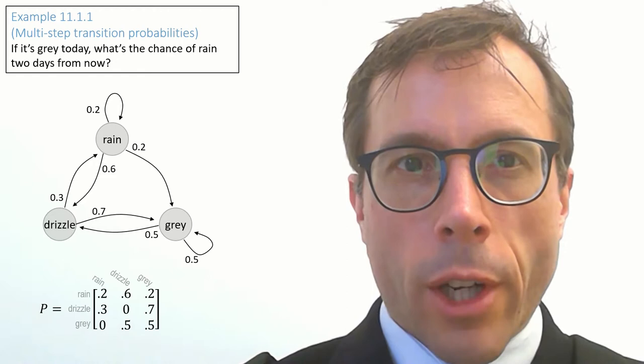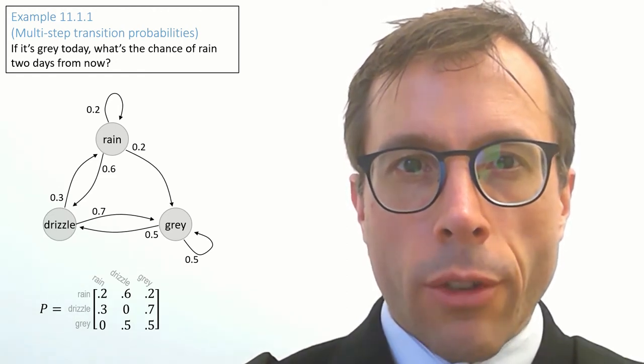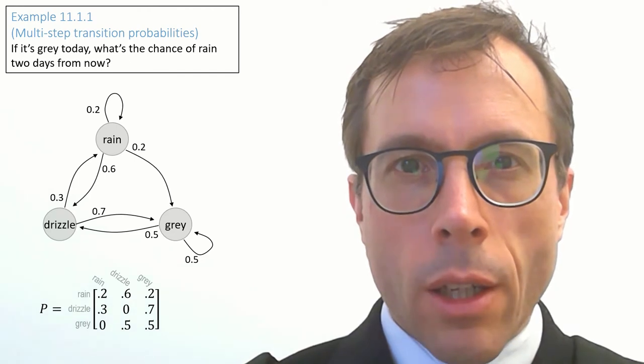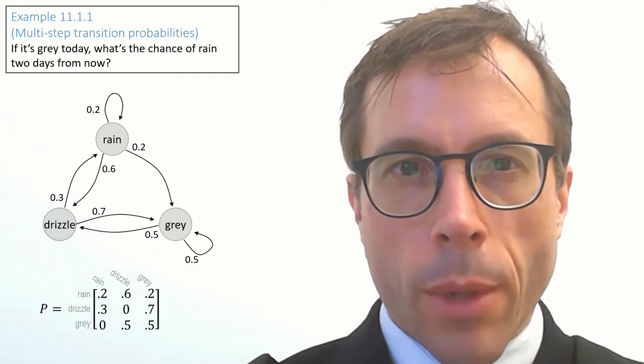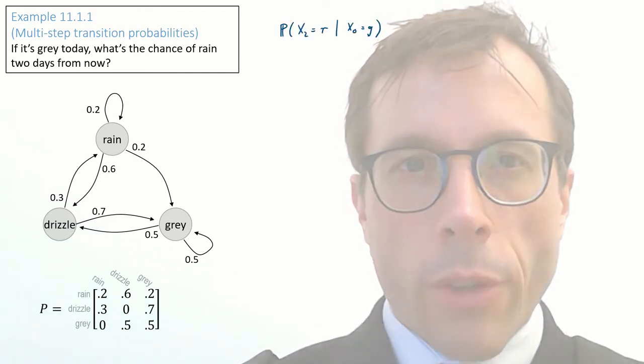Here's the state space diagram and the transition matrix. The question asks us, if it's grey today, what's the chance of rain two days from now? In other words, if x0, x1, dot dot dot is the Markov chain, what is the probability that x2 equals rain, conditional on x0 equals grey?